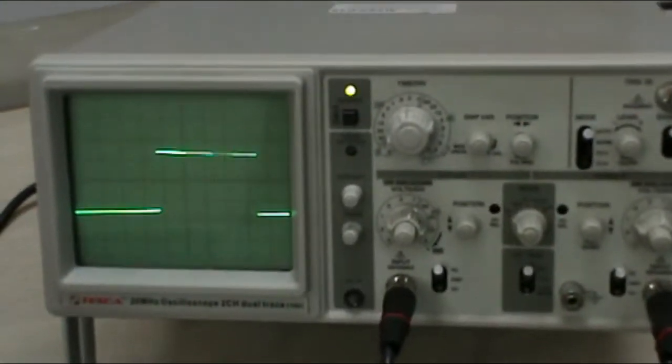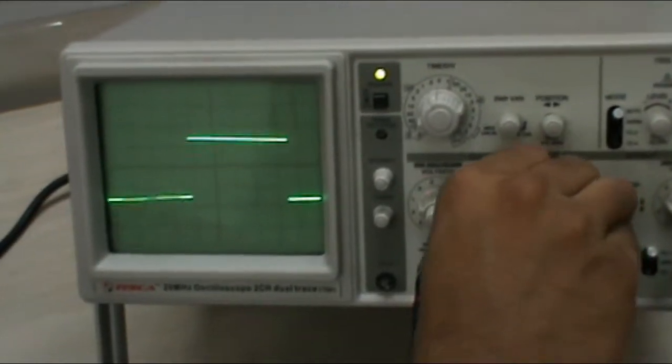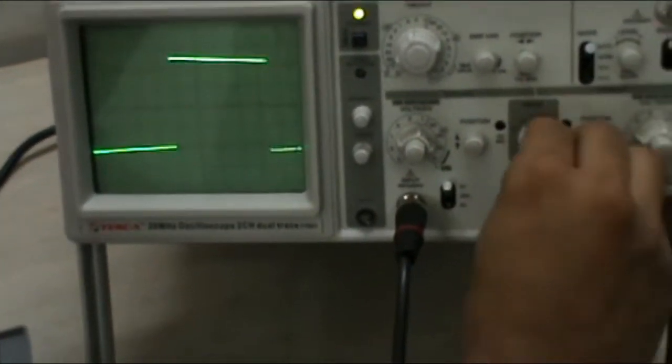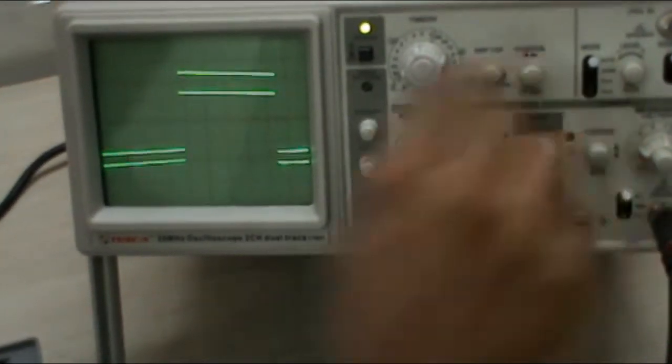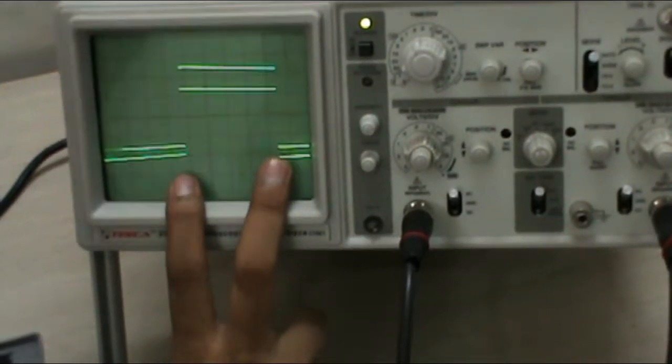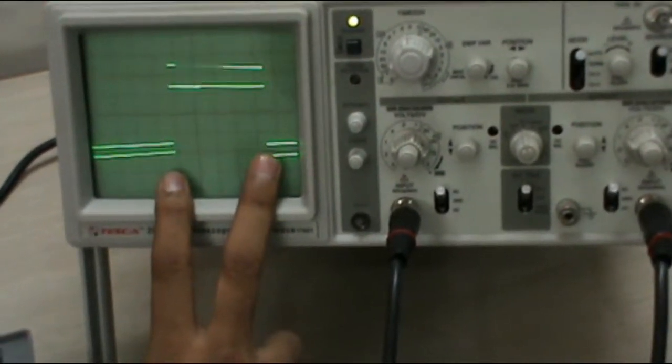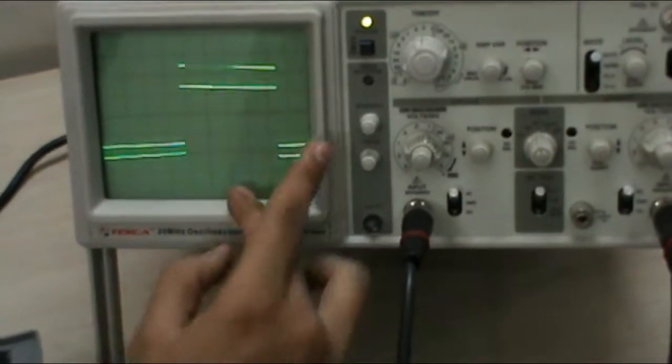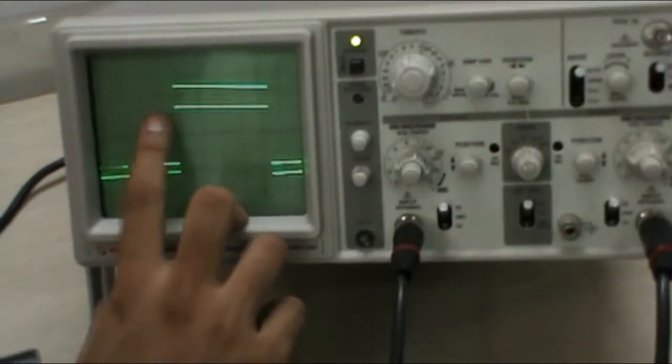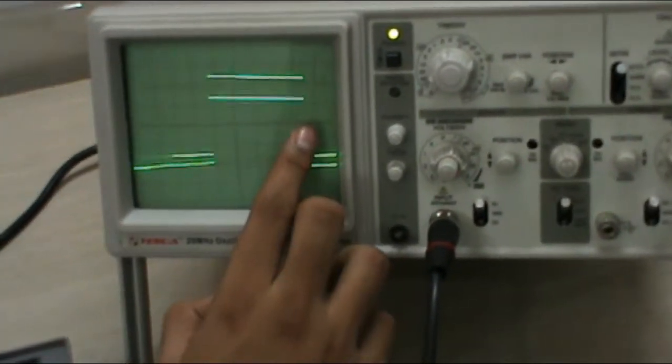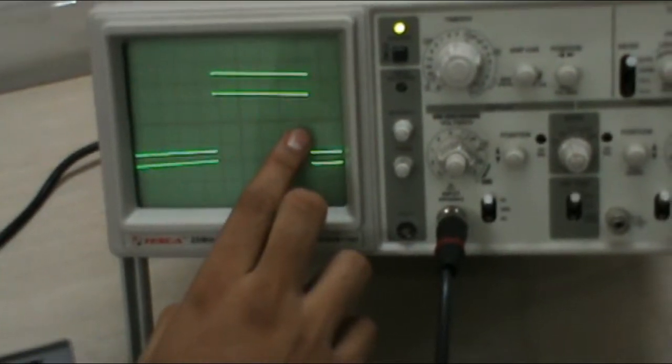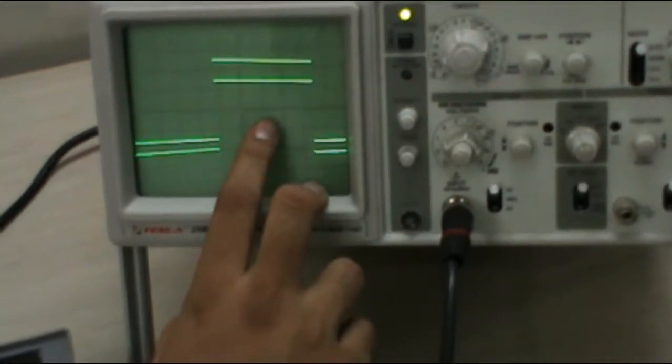Now in order to measure the rise time and the fall time, we will set the oscilloscope to alternate. By setting it to alternate, we can see both the CH1 waveform and the CH2 waveform. The rise time is known as RTD and the fall time is known as FTD. We will measure the time difference between the rise time of both the pulses and the fall time of both the pulses.